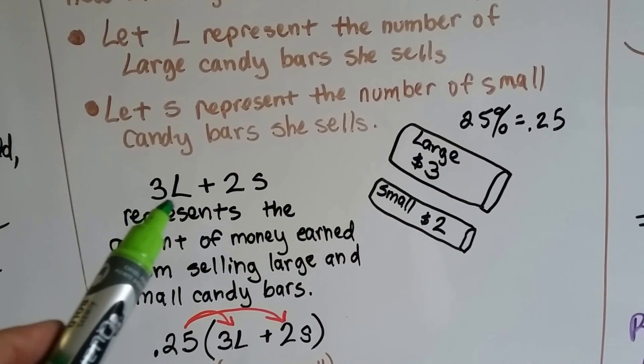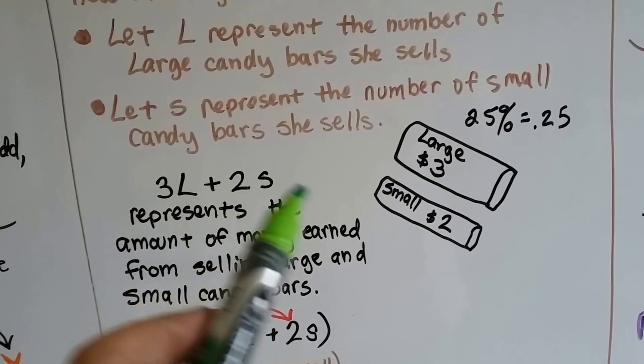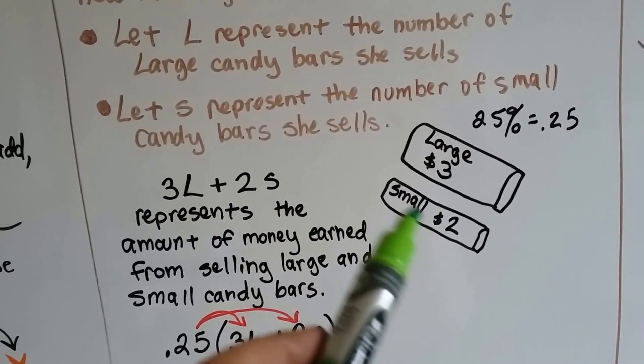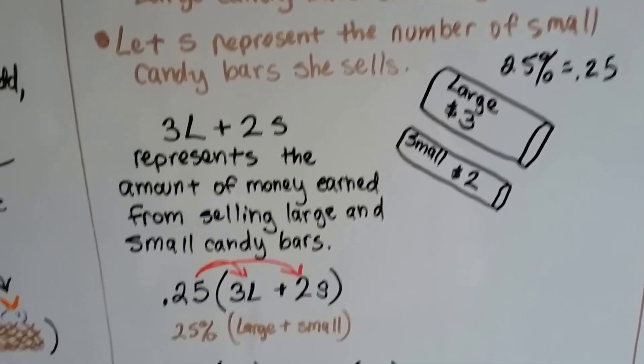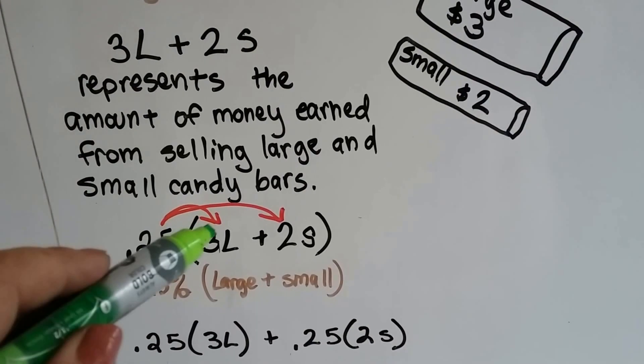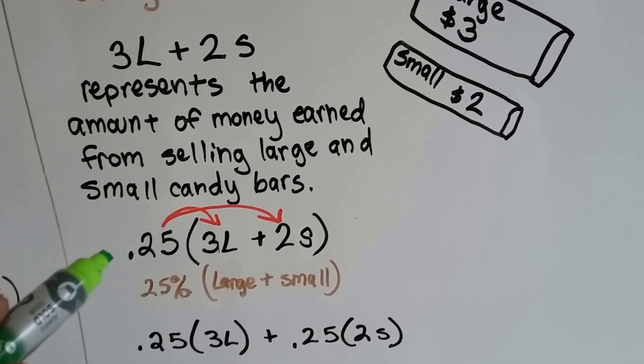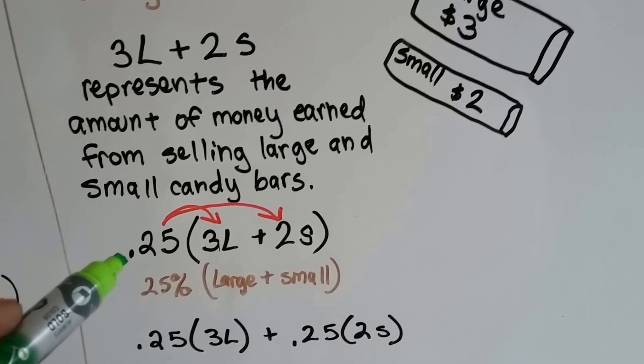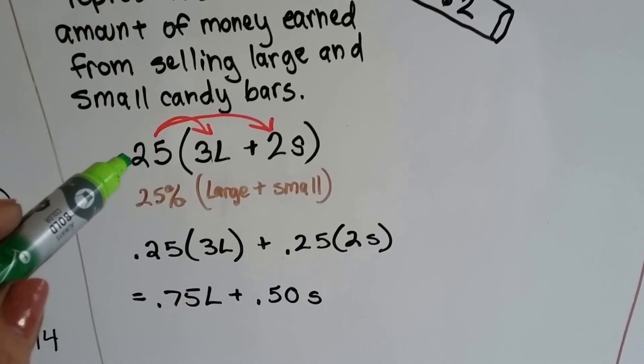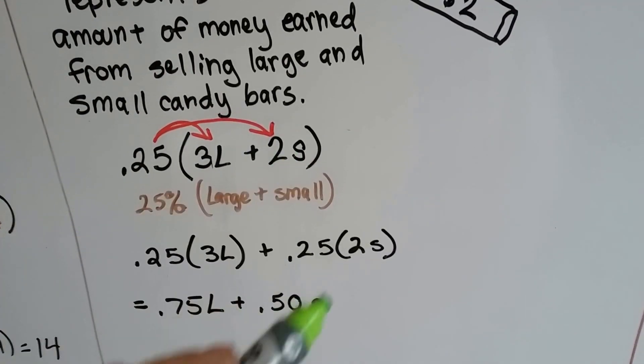So 3L is going to be the large at $3 a piece and 2S is going to be the $2 for each small one. It's going to represent the amount of money earned from selling large and small candy bars. So we need to multiply the 3L plus 2S times the 25%. So we do it as its decimal form .25.